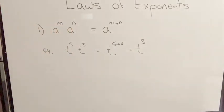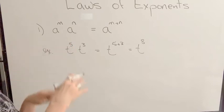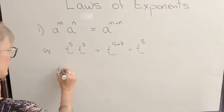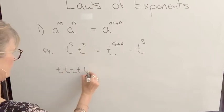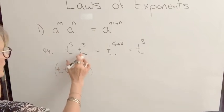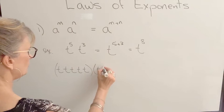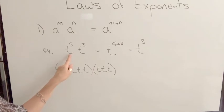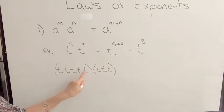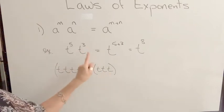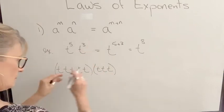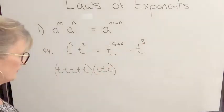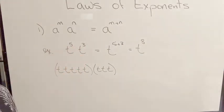I could illustrate why that's true in this example. What T to the 5th means is T times itself 5 times. So if I take T to the 5th, which is this, and I multiply by T cubed. T cubed means T multiplied to itself 3 times. This is an abbreviated way of writing T multiplied to itself 5 times. This is an abbreviated way of writing T multiplied to itself 3 times. And then if I took all of this, I have a total of T being multiplied to itself 8 times. So hopefully that helps you understand why you are adding those exponents.